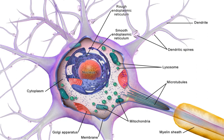The soma of a neuron — i.e., the main part of the neuron in which the dendrites branch off of — contains many organelles, including granules called Nissl granules, which are composed largely of rough endoplasmic reticulum and free polyribosomes.